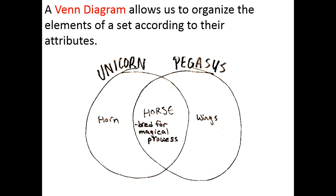One way to organize the information about a set is with something called a Venn diagram. And when we use a Venn diagram, what we're going to be doing is looking at what are called attributes of a set — qualities that the subsets of a set have.